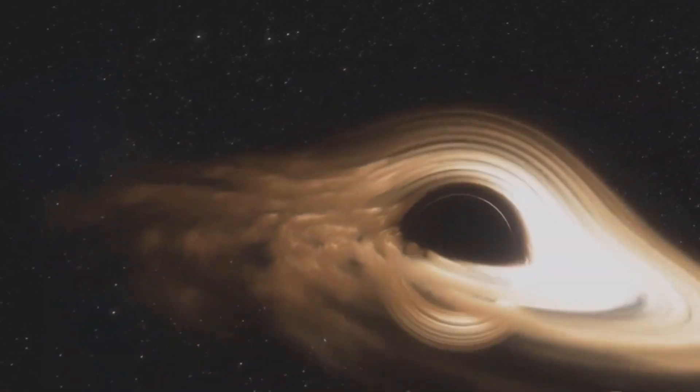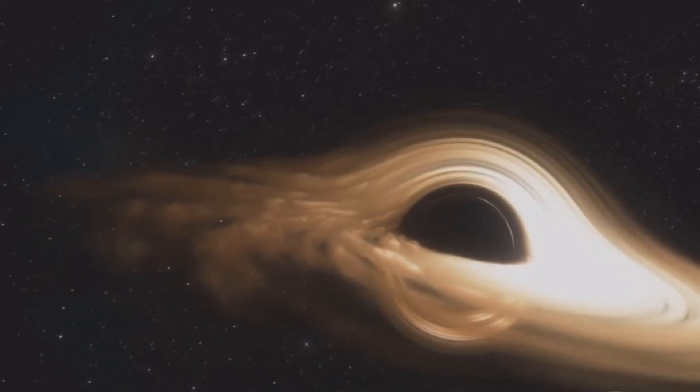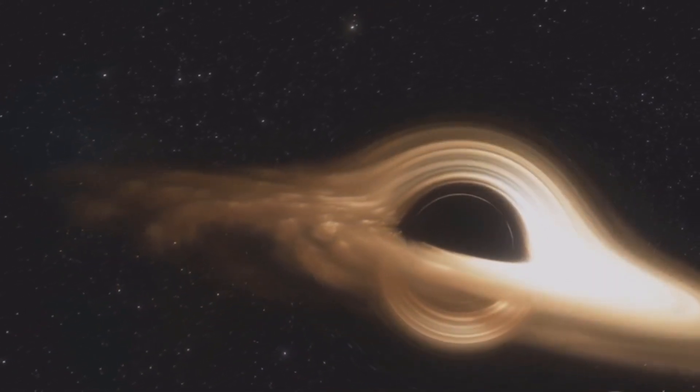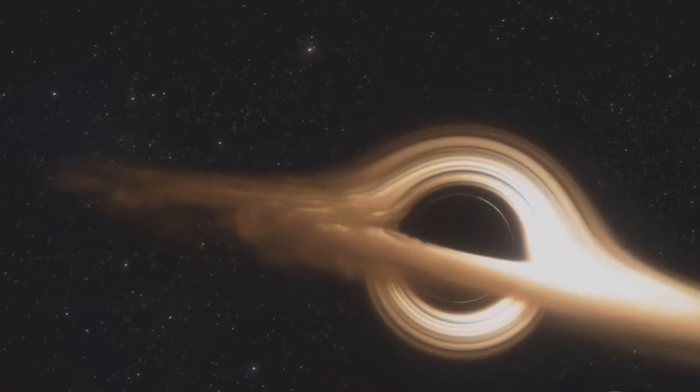Current models of black hole formation struggle to explain how Phoenix A could have grown so large in such a short amount of time. It could have been formed from the collision of multiple supermassive black holes.